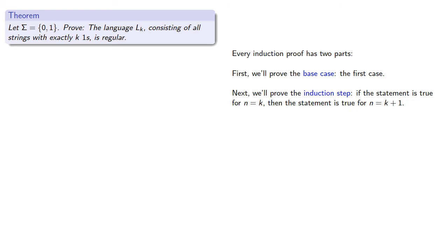If the statement is true for n equals k, then the statement is true for n equals k plus 1. In other words, if it's true for something, then it's true for the one after.